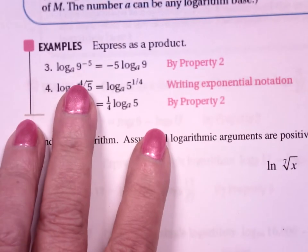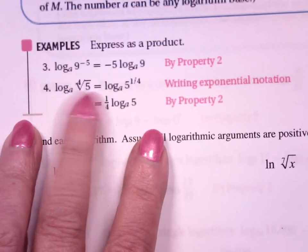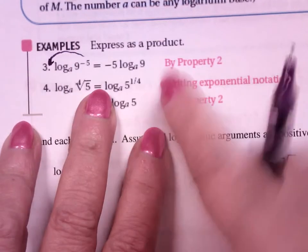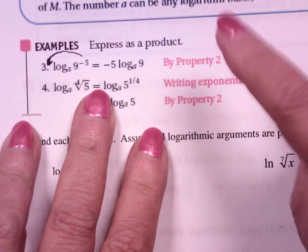So if I have log base a of 9 to the negative 5, I just bring the negative 5 down in front. It's negative 5 log base a of 9.